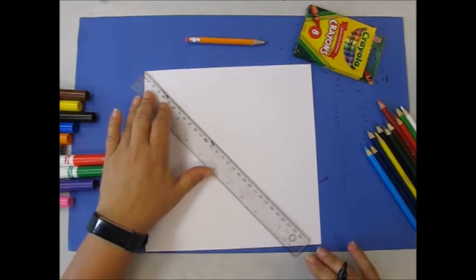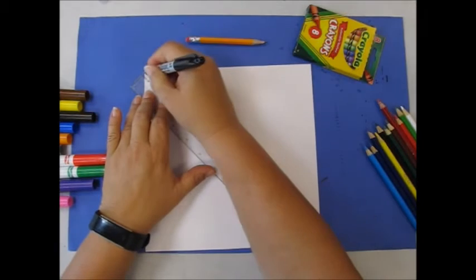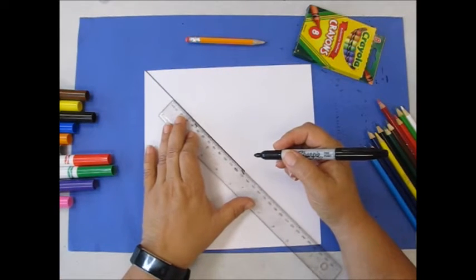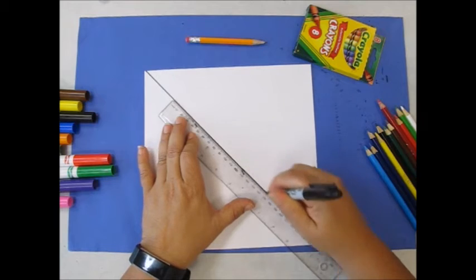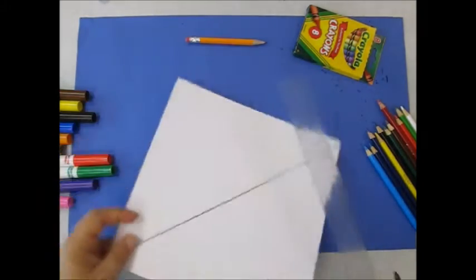We're going to make a diagonal line across the piece of paper. Now my ruler is just a little bit short so I go halfway down, then continue the line to the corner. So you're making an X across the paper. You'll do the same way on the other diagonal.